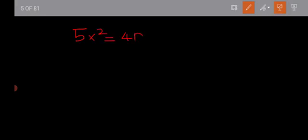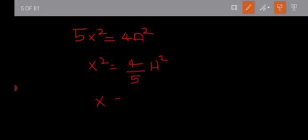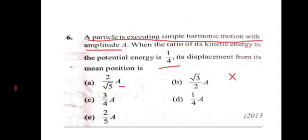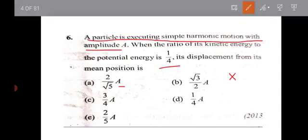Solving: 5x squared equals 4A squared, so x squared equals 4 divided by 5 times A squared. Therefore x equals plus or minus 2 divided by root 5 times A. Option A is the right answer.